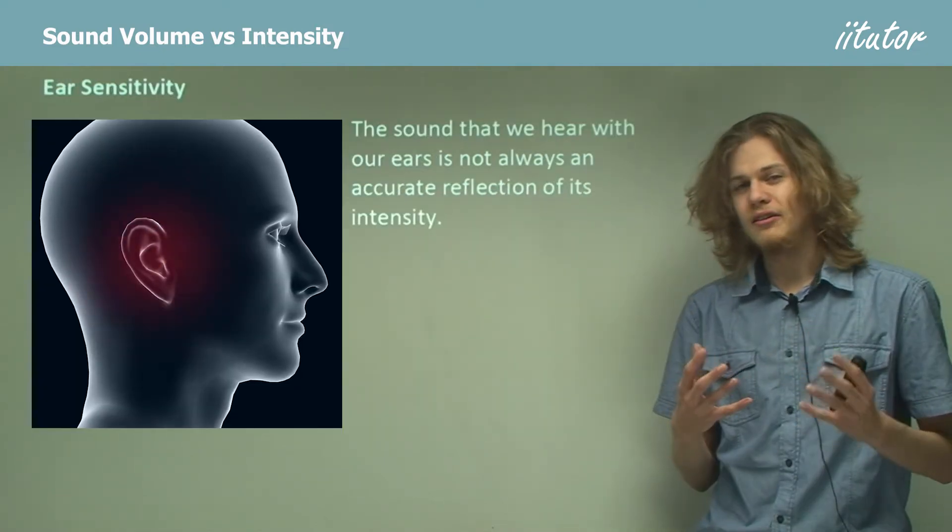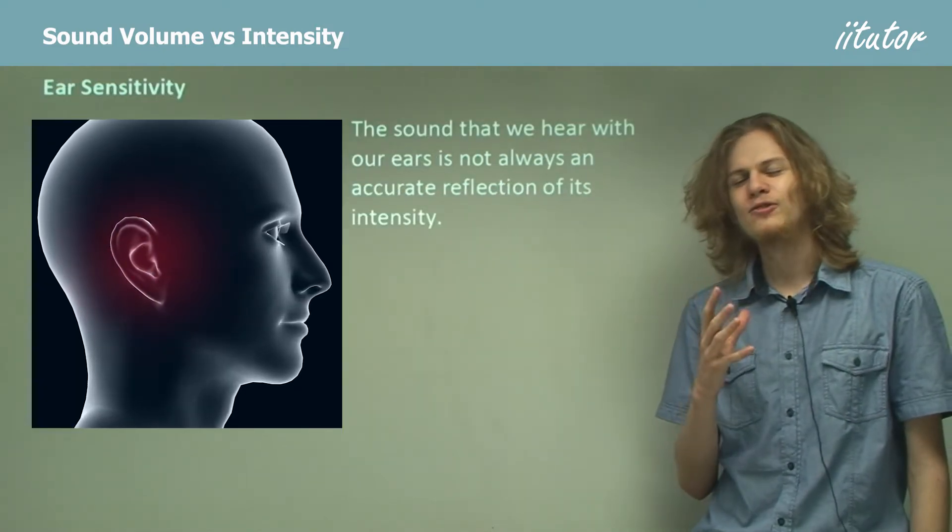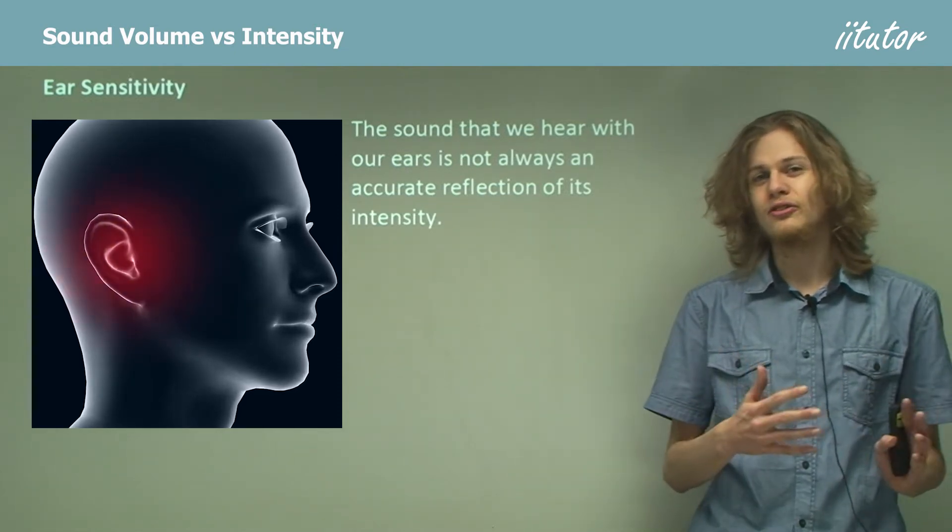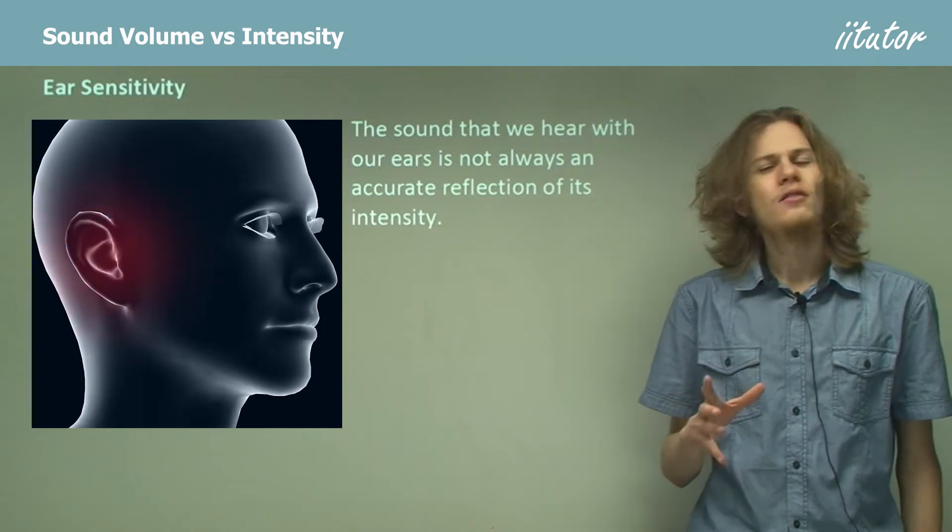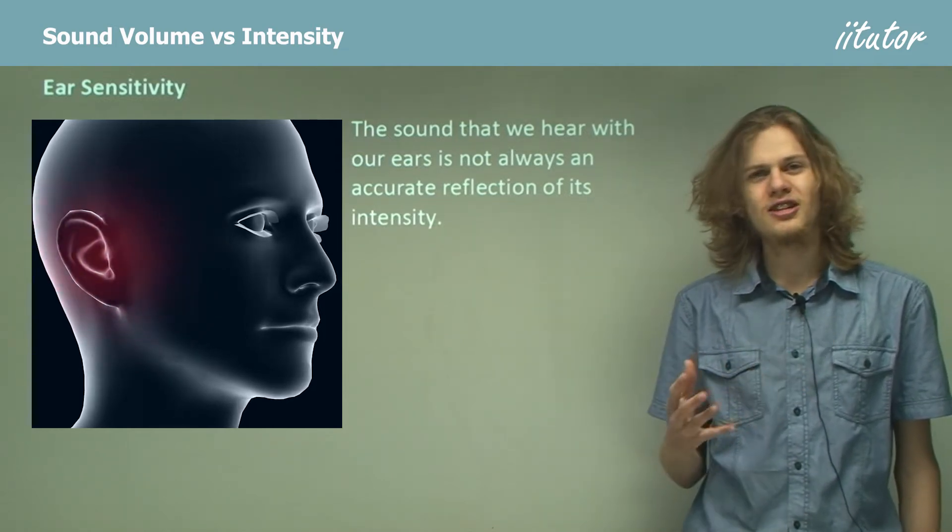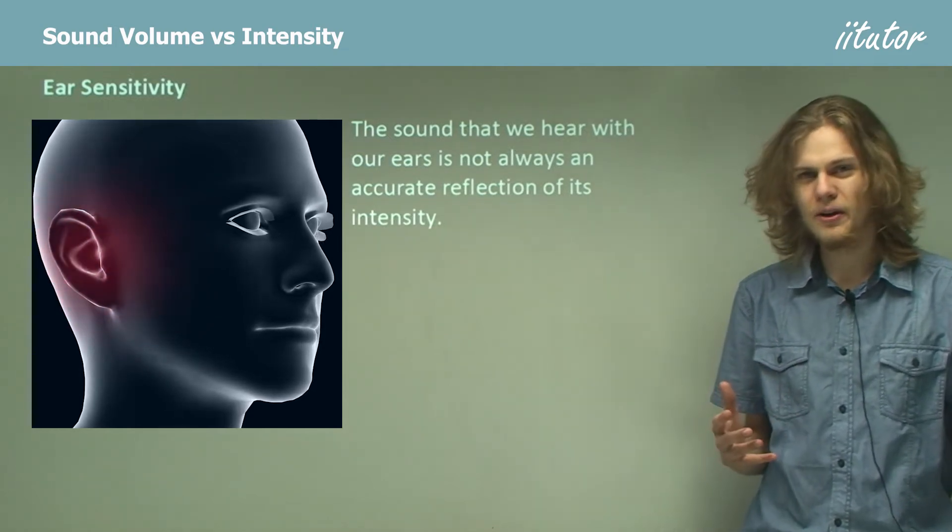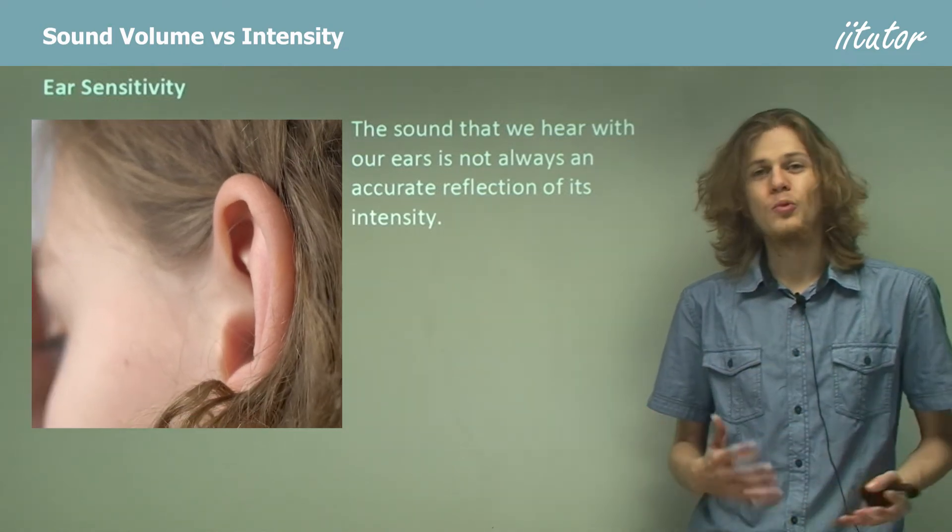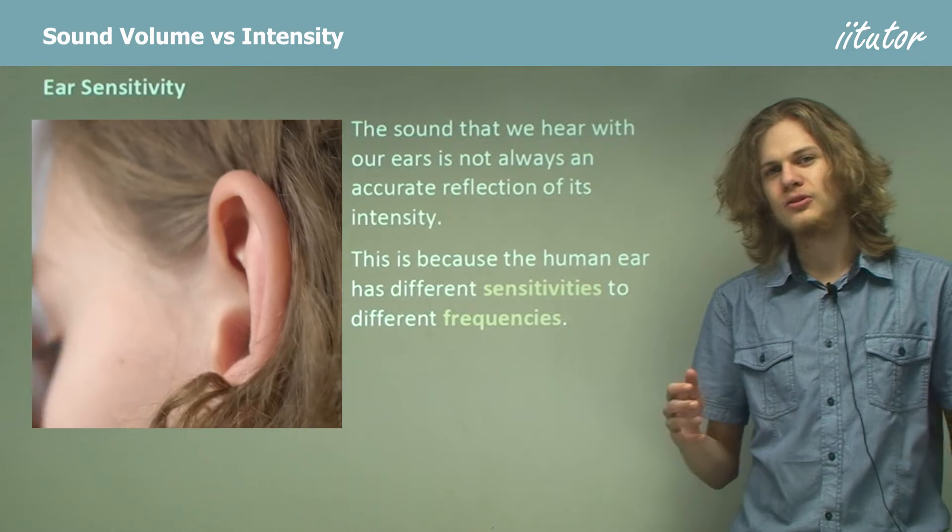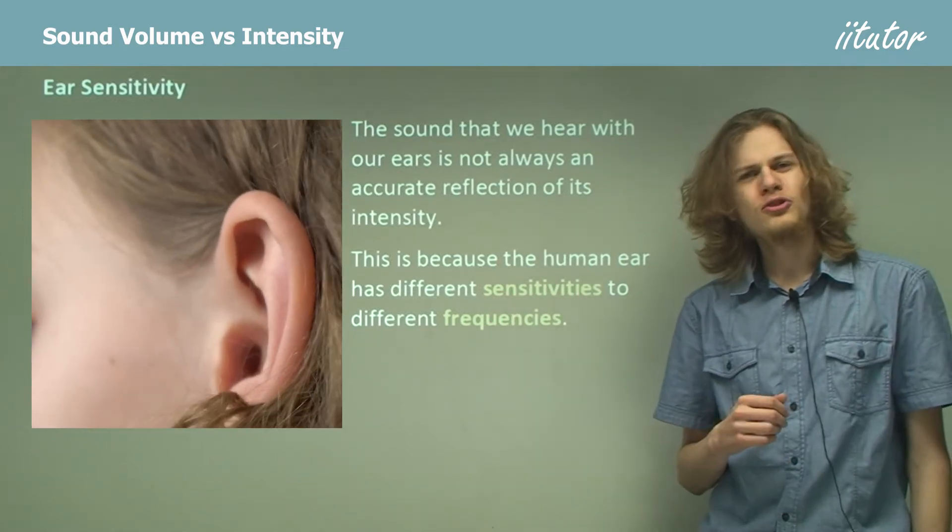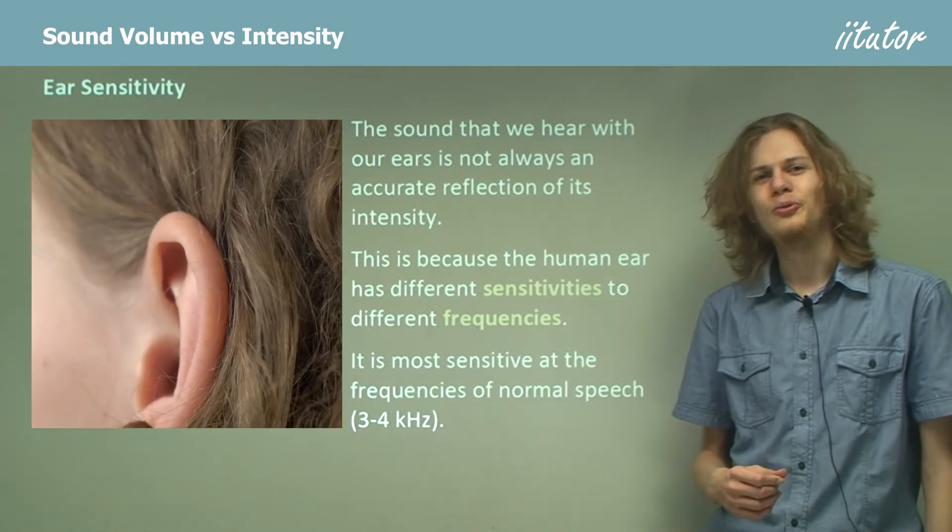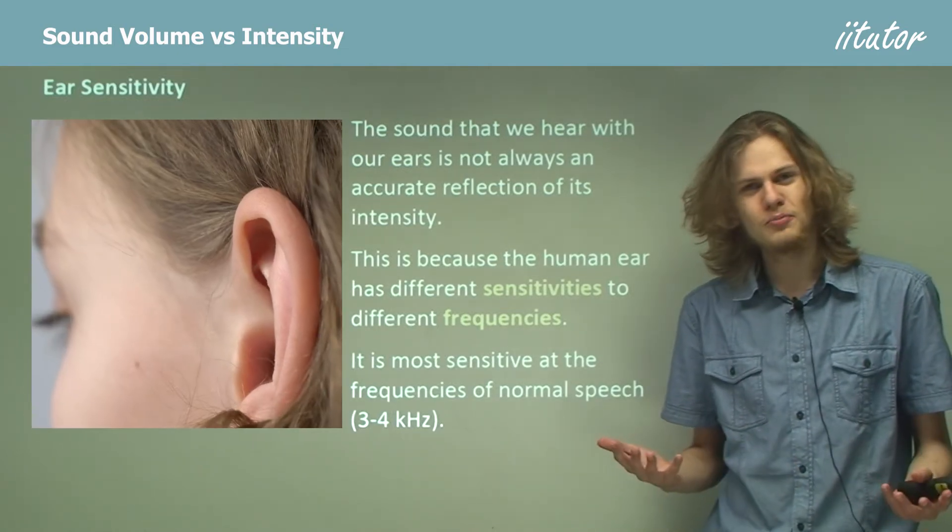So the sound that we hear in our ears is not exactly an accurate representation of intensity. Why would that be? Well we've discussed before about infrasound and ultrasound but it turns out that the human ear has different sensitivities to different frequencies of sound. When we get close to ultrasound or close to infrasound we can't hear those, but frequencies right in the middle. So what do you suppose the human ear is most sensitive to? Now the human ear is most sensitive to the sound of other humans as you might have expected.